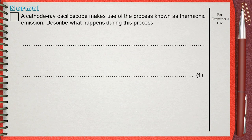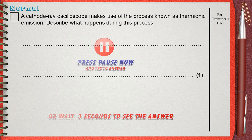A cathode ray oscilloscope makes use of the process known as thermionic emission. Describe what happens during this process.